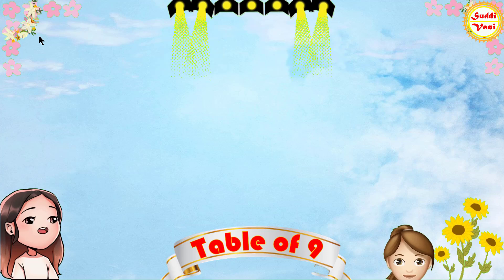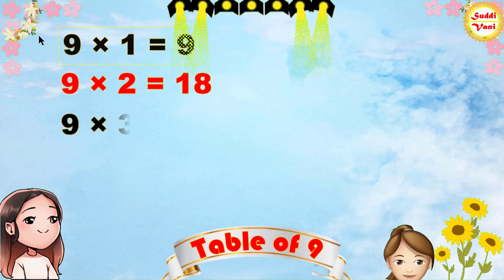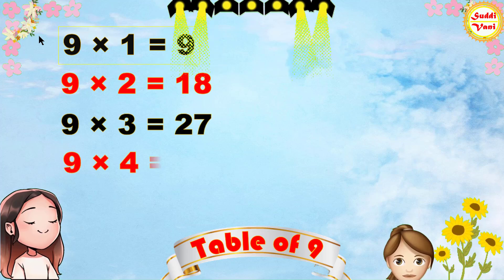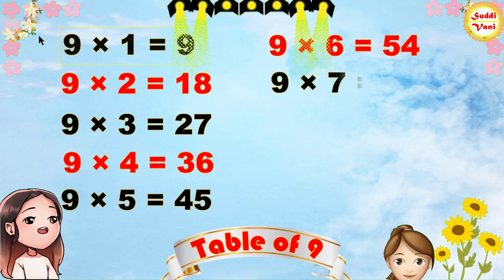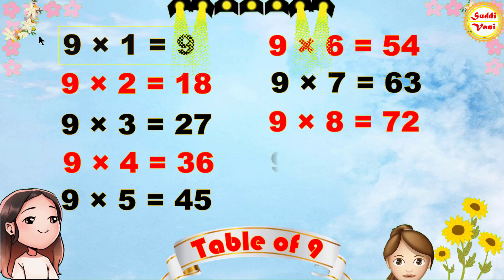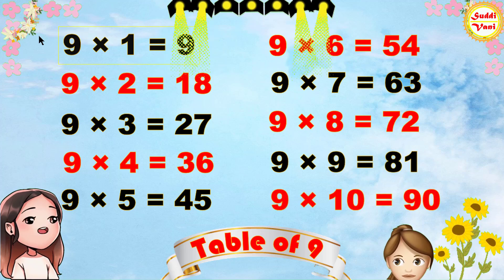Once again. 9 1's are 9, 9 2's are 18, 9 3's are 27, 9 4's are 36, 9 5's are 45, 9 6's are 54, 9 7's are 63, 9 8's are 72, 9 9's are 81, 9 10's are 90.